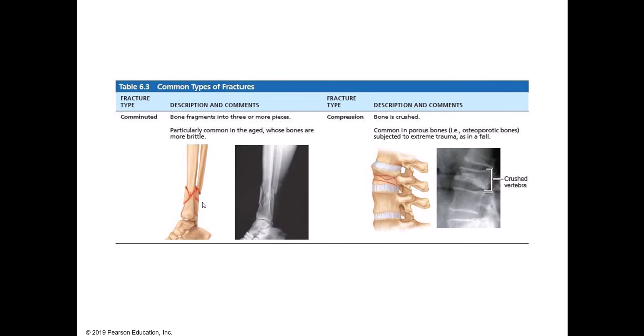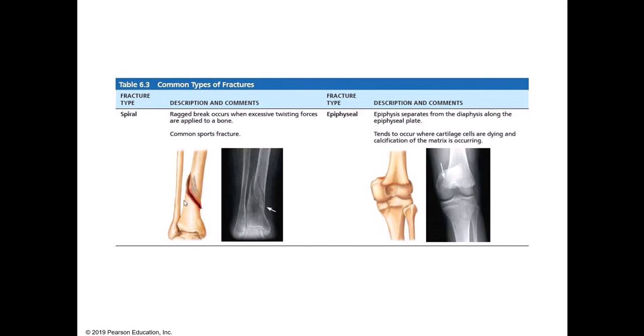Compression fractures occur when the bone is crushed, and are very common in osteoporotic bones. Think of a crushed vertebra — like a car compactor that smooshes down and flattens a car; that's a compression type fracture. Spiral fractures are a very common sports injury, usually caused by some kind of twisting or torsion forces applied to the bone. Epiphyseal plate fractures occur when the epiphysis separates from the diaphysis along the epiphyseal plate.